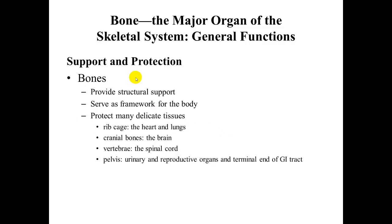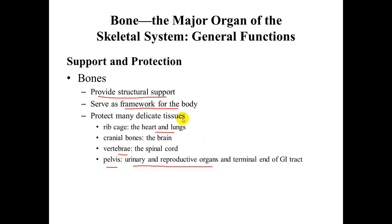Looking at support and protection, bones provide structural support as a framework for the body. They protect many delicate tissues: the ribcage protects the heart and lungs, the cranial bones protect the brain, the vertebrae protect the spinal cord, and the pelvis protects the urinary and reproductive organs.